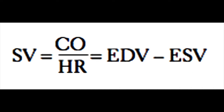Another formula for stroke volume is: stroke volume equals cardiac output divided by heart rate, which also equals the end-diastolic volume of the left ventricle minus the end-systolic volume of the left ventricle. You should remember all of these formulas, as you will be tested on them. Most likely they will give you the values in each equation, but it will be up to you to remember the equations themselves.